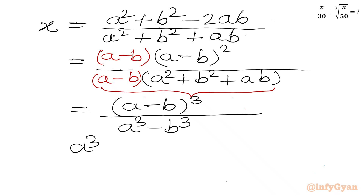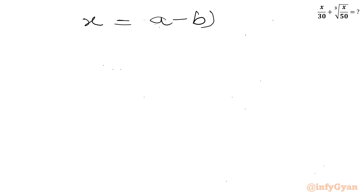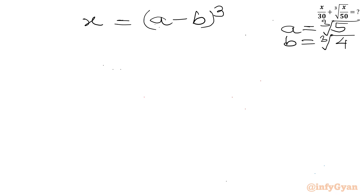We have already calculated that a cubed minus b cubed equals 1, so x equals (a minus b) whole cube. Putting back the values of a and b, x equals (cube root 5 minus cube root 4) whole cube.